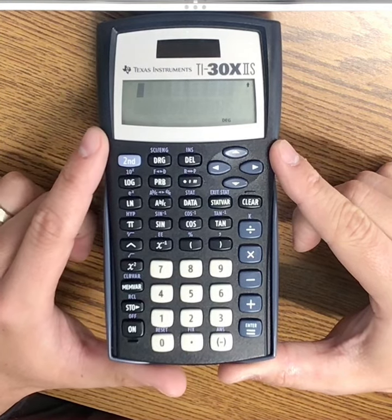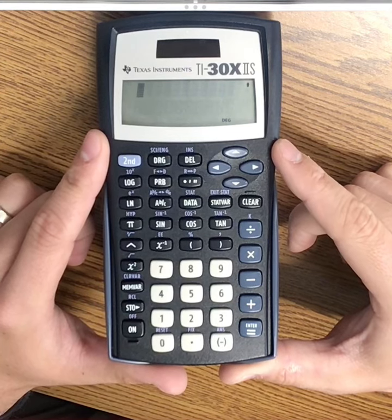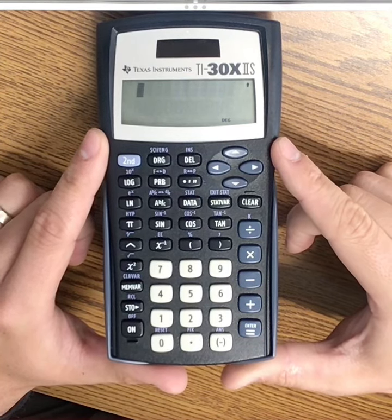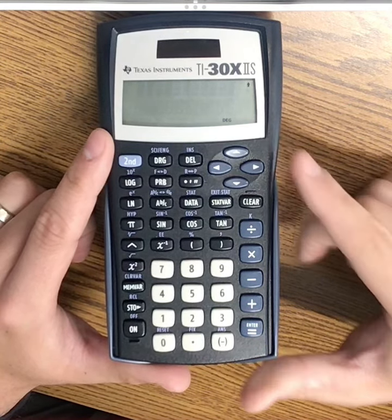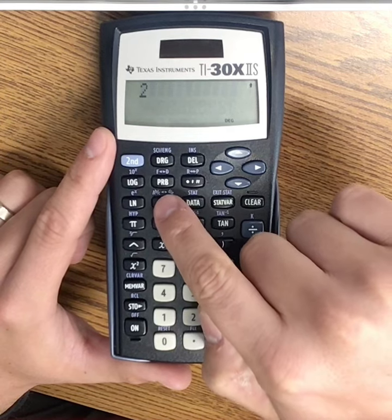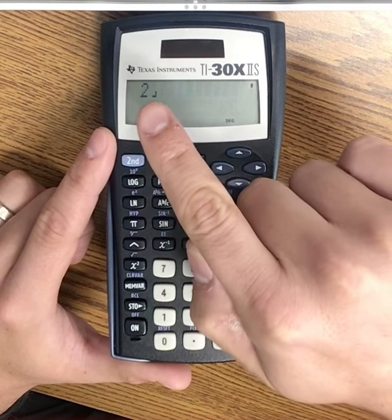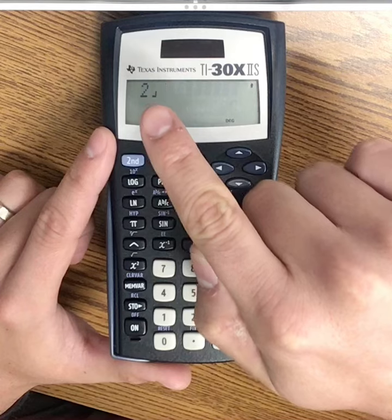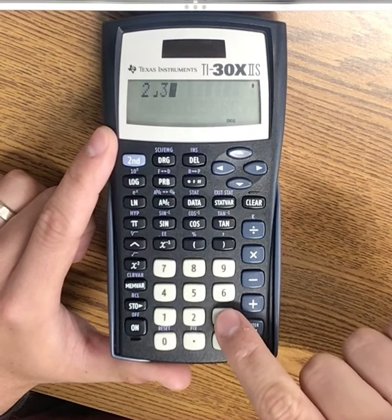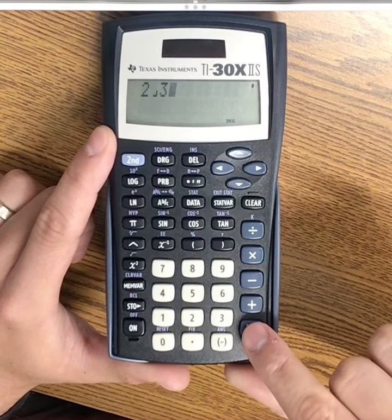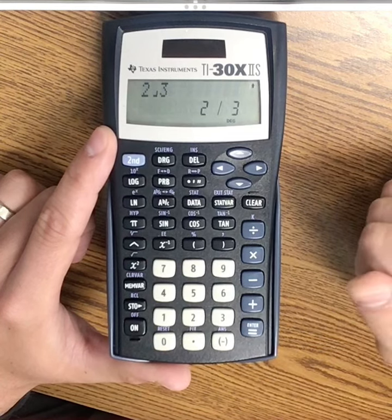For example, if I'd like to type out the fraction two-thirds, I would click 2, the fraction button A B/C. It gives this little backwards L shape. And then I type 3 for two-thirds. If you press enter, this gives you the fraction with the fraction bar.